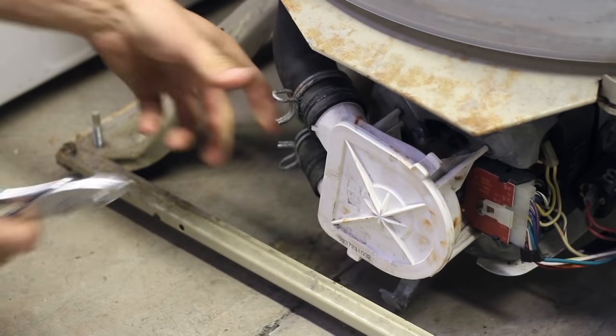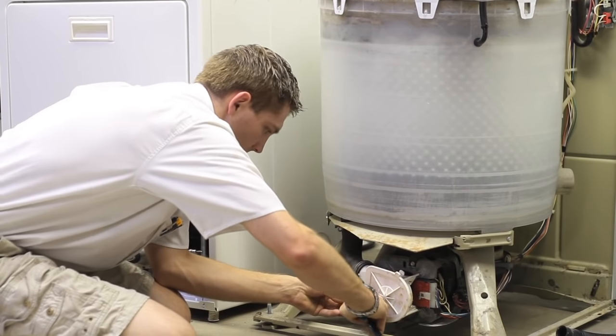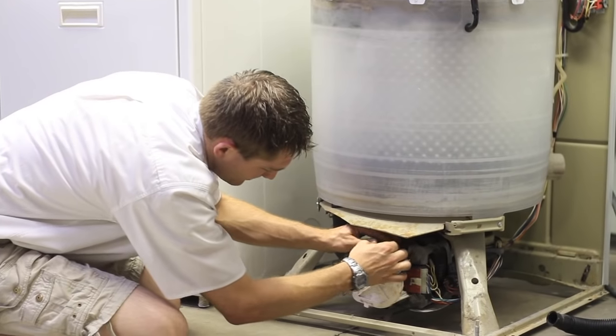Make sure you re-tighten the metal clamps or it will leak all over your floor next time you use it. We're going to re-attach the clamps to hold the drain pump in place.